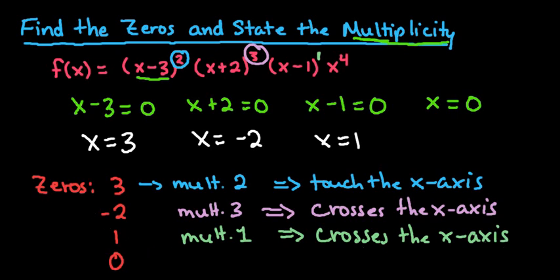And then the last one, 0, since it has a multiplicity of 4, and that is even, we can say that it touches the x-axis at that point.